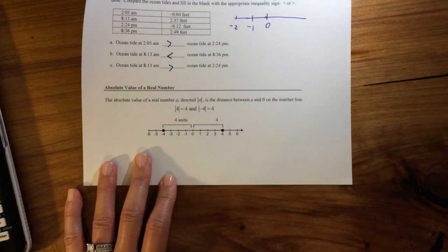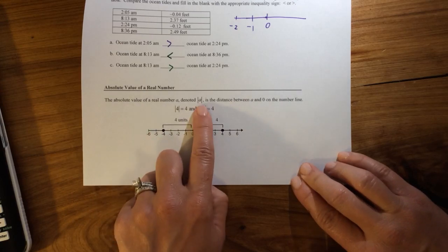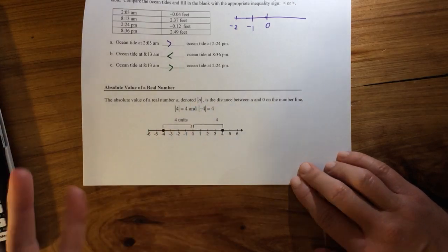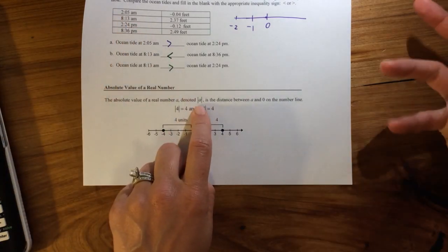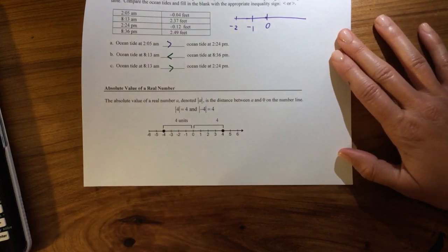Alright, now we've got absolute value of a real number, denoted with these absolute value bars or straight bars. It's the distance between a and 0 on the number line.